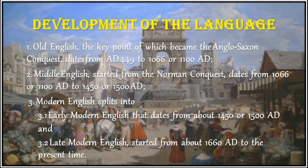Middle English dates from 1066 or 1100 A.D. to 1450 or 1500 A.D. Modern English started from about 1660 A.D. to the present time.